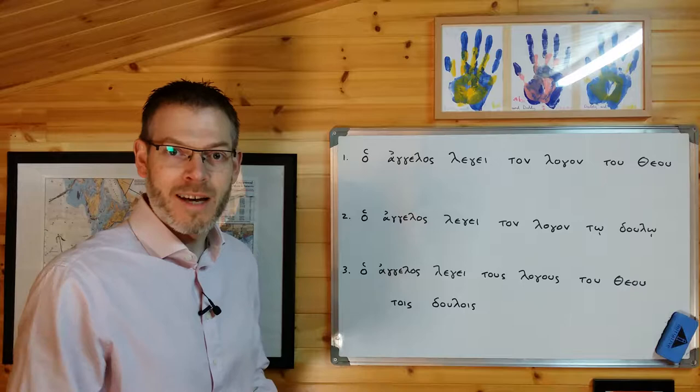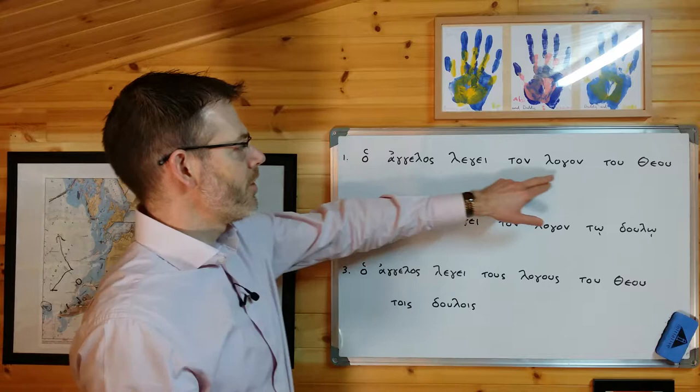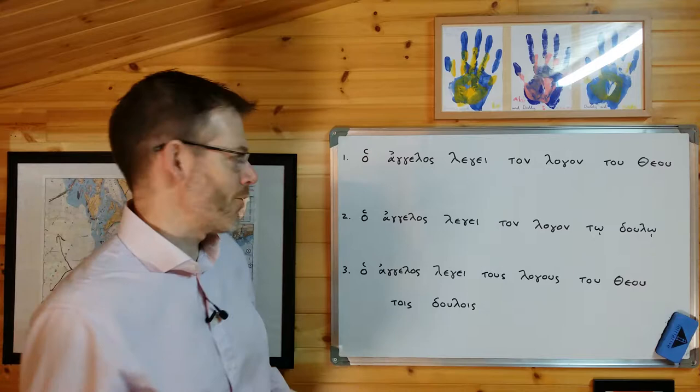I've got here three examples for you, which are similar to the examples that you'll find in Jeremy Duff's book on page 31 and 32, but let's look at these just to give you a sense of how the genitive and dative cases function. Let's go through these one at a time, and I'll translate them for you. Follow along with me. Ho angelos legei ton logon tou theou.